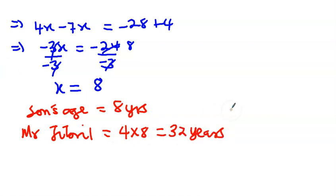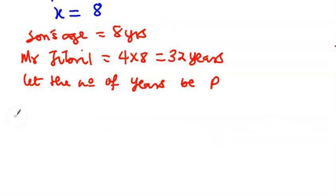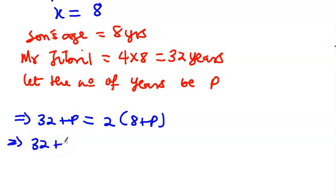Going back to the question, let the number of years be p. So this implies that thirty-two plus p is equal to two times eight plus p. At this particular year, the father will be twice as old as his son.